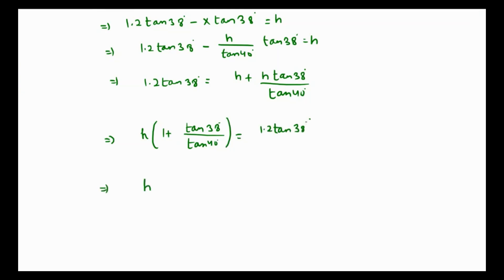If we divide both sides by this expression, h is going to be 1.2 tan of 38 degrees over 1 plus tan of 38 degrees over tan of 40 degrees. Let me grab my calculator and get this value.